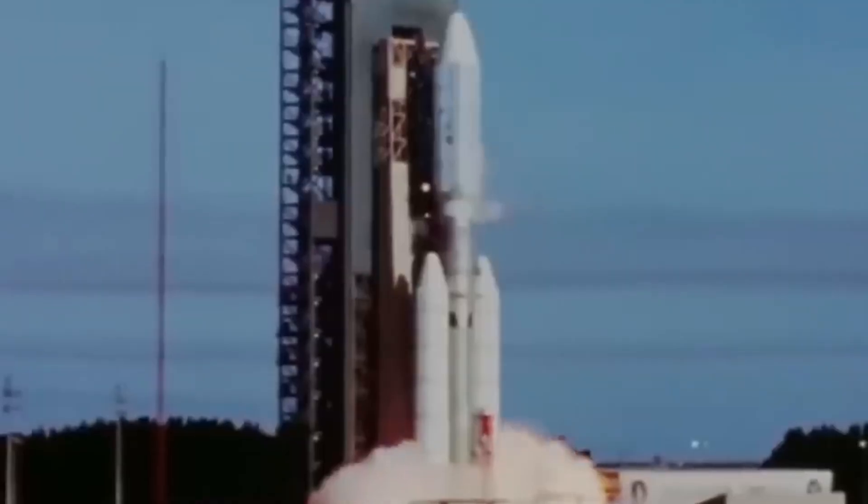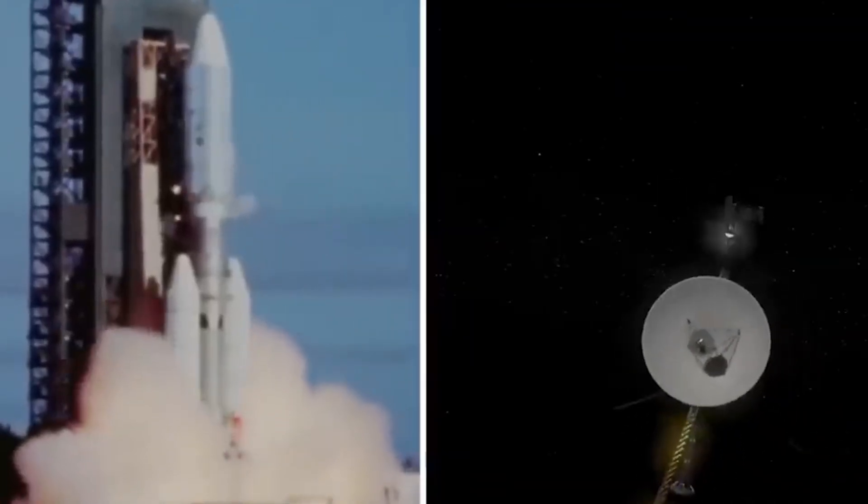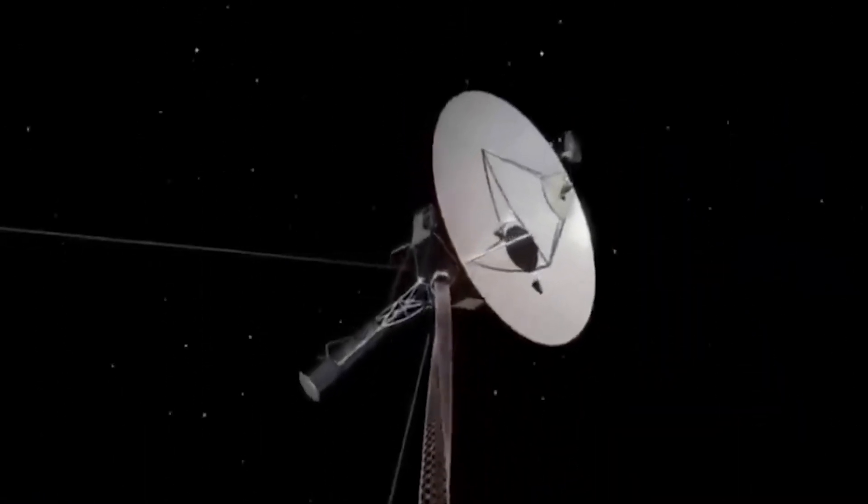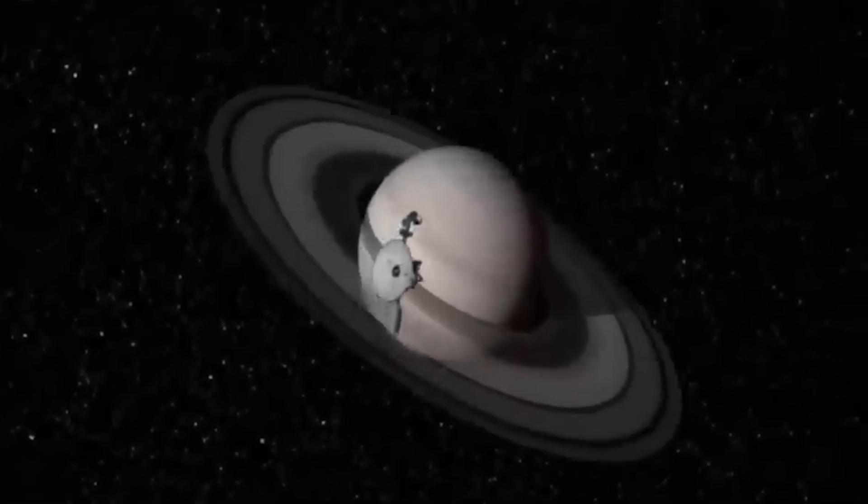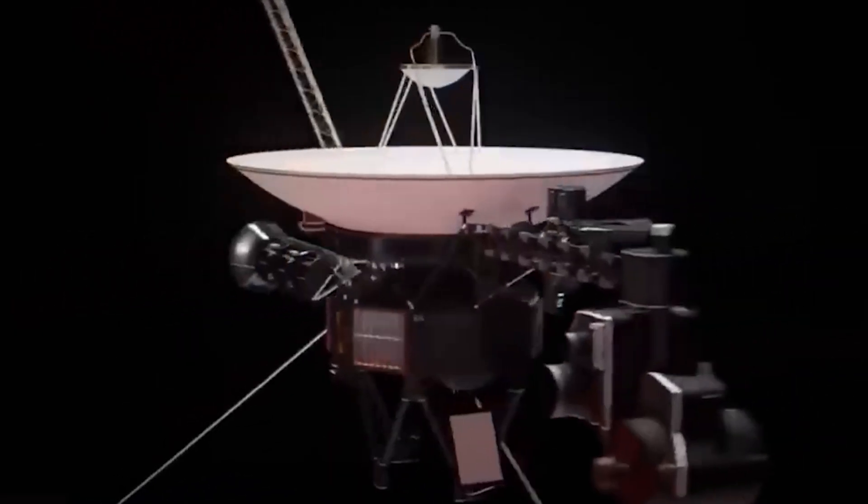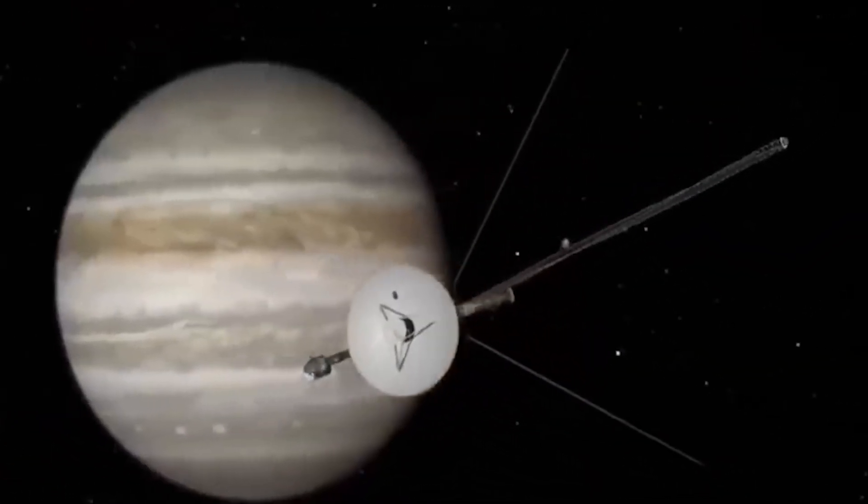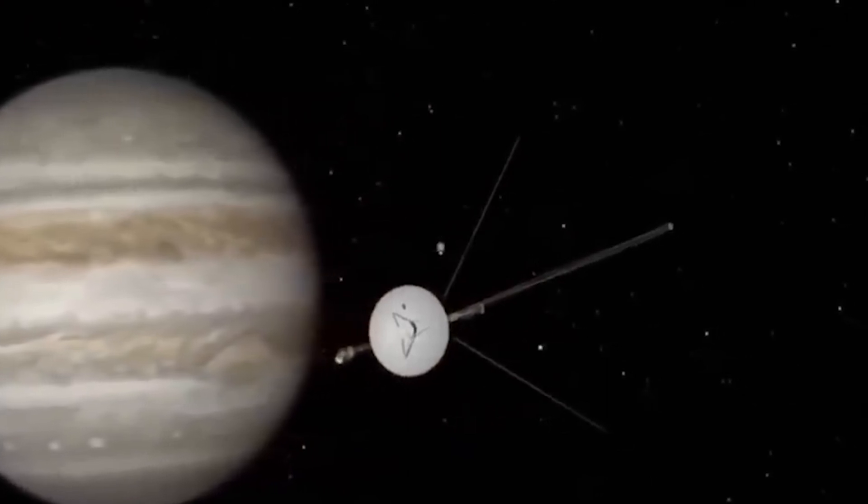Since they took off from the Kennedy Space Center in 1977, they've covered more distance than any other spacecraft in history. Voyager 2 was the first to hit the skies, leaving Earth's atmosphere on August 20th, 1977. Exactly two weeks later, Voyager 1 set off to join its twin in space.